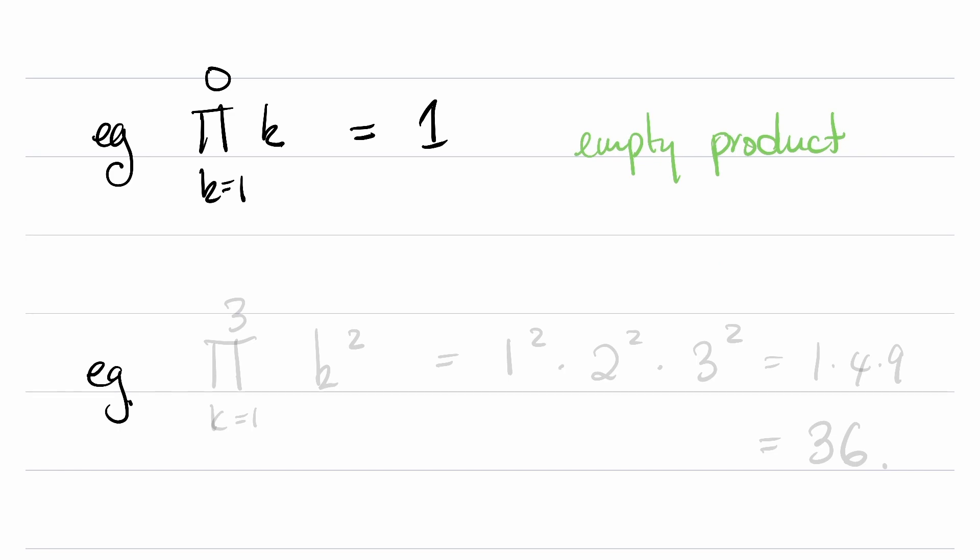And last but not least, let's do something a little bit more complicated. These can get quite complex. Let's just do 1. So this is going to be the product of all k squareds as k ranges from 1 to 3.